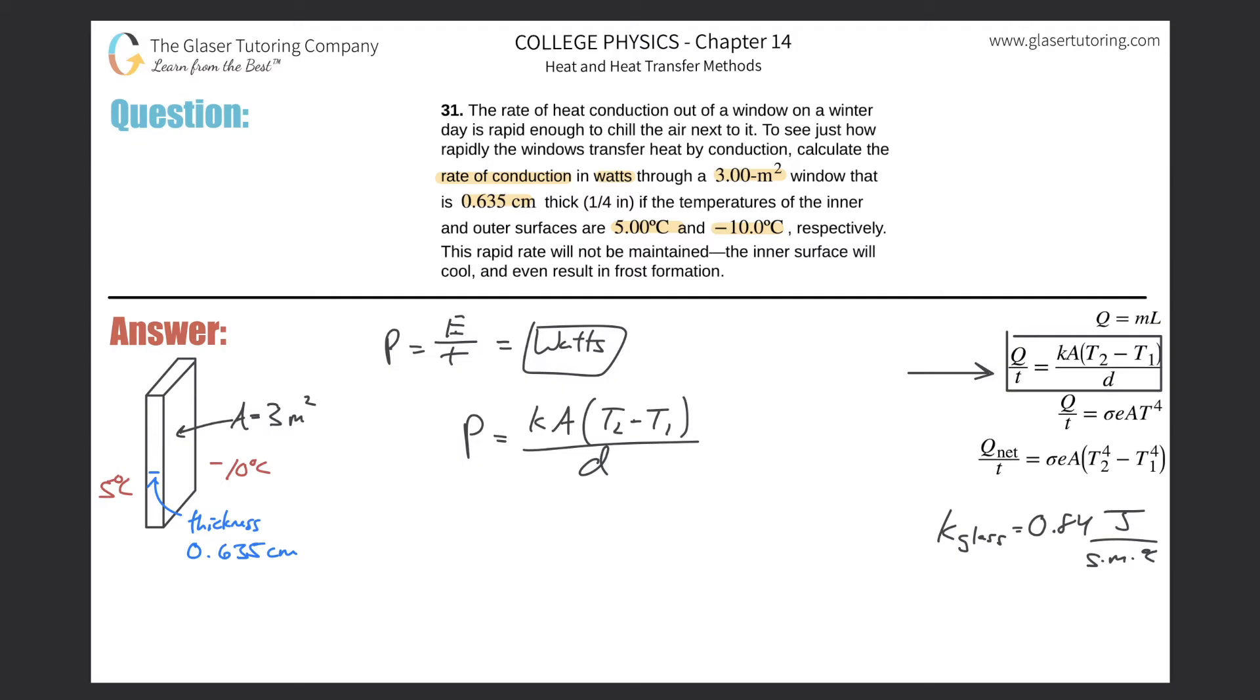In this case, we have a glass window. So one side's five, the other side's negative 10 degrees Celsius. And the heat is going to be lost from the inside and eventually gained by the outside. And in order to go from inside to outside, it has to travel through this particular medium. That's conduction.